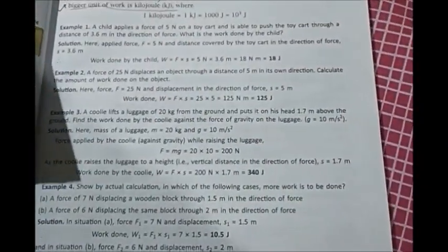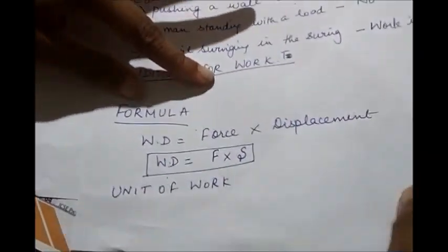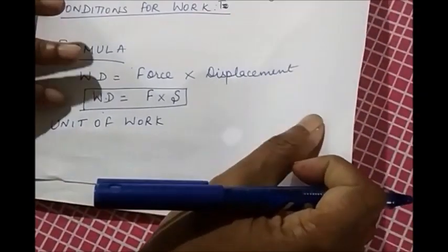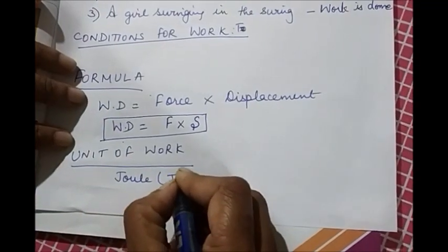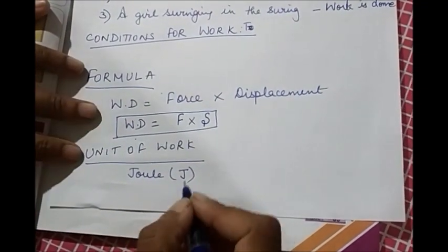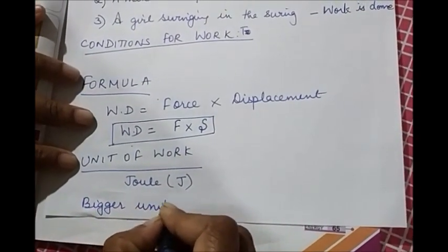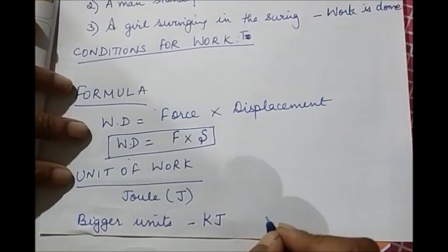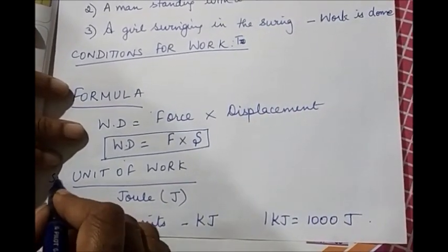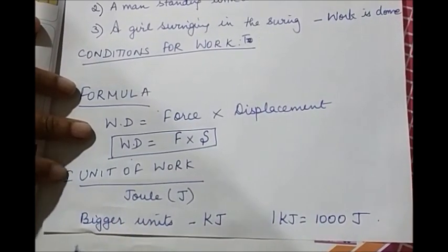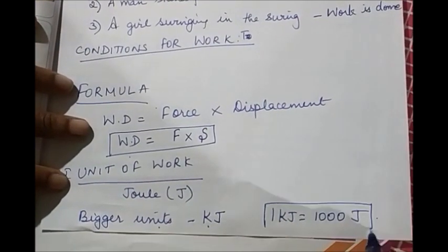The last topic for today is unit of work. S I unit of work is joule, represented by letter J. There are other bigger units like kilojoule. One kilojoule is equal to 1000 joules. So S I unit of work is joule. You should remember this. And kilojoule could also be a unit, but it is a bigger unit. And one kilojoule is 1000 joules.